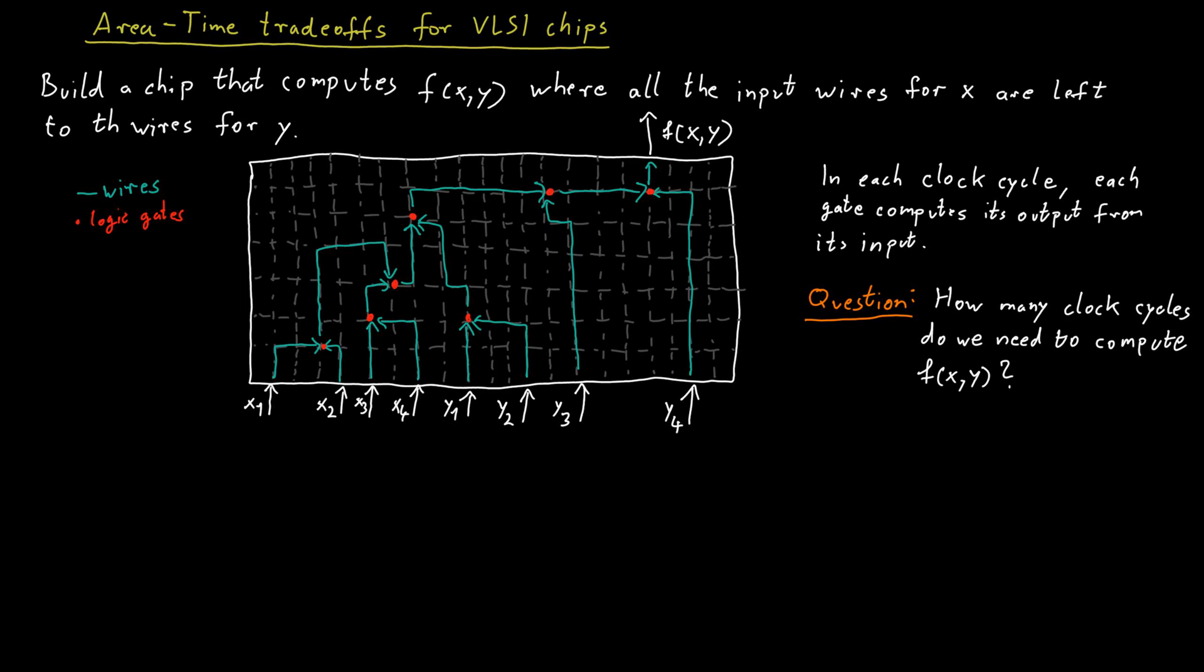To think about this, we imagine that we are going to cut the chip vertically between the left side and the right side, after the last x input and before the first y input. We just cut it in half. And now we think about Alice and Bob as simulating the left and the right part of the chip respectively.